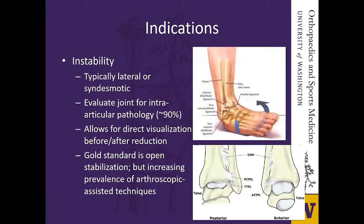Another common indication is instability — typically lateral or syndesmotic, though other locations have been found as well. The role of ankle arthroscopy here is to evaluate the joint for intra-articular pathology prior to addressing instability, which can be present in up to 90% of cases. Arthroscopy allows direct visualization of the joint before and after reduction. While the gold standard treatment is open stabilization — whether reconstruction of the lateral ankle ligaments or syndesmotic fixation — there's increasing prevalence of arthroscopic-assisted techniques.